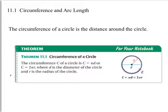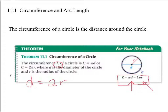The circumference of a circle, which is C, is C equals pi D, or C equals 2 pi R, where D is the diameter and R is the radius. Diameter is 2 times your radius, so that's how those two equations are related to each other.